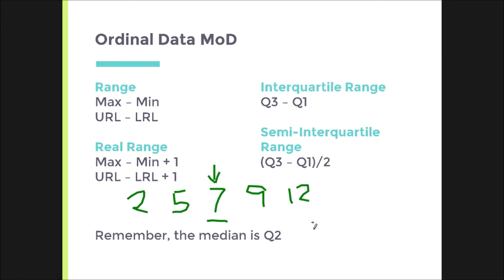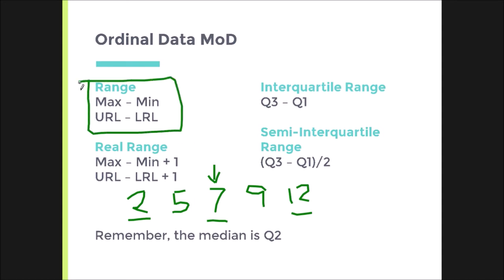Because these data are in order, I can also identify the minimum and the maximum — which is 12. I can take the minimum and maximum to compute a range. The range just takes the maximum and subtracts the minimum: 12 minus 2 is 10. I can also use these to get the real range, which would just be adding 1 to the range — so 12 minus 2 is 10, plus 1 is 11.